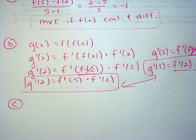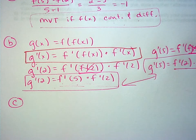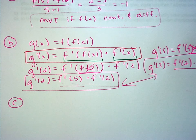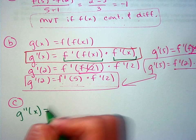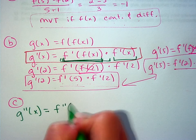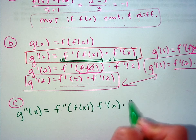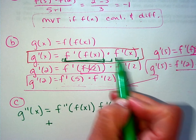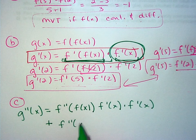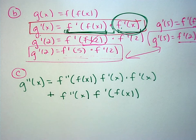Part c: show that the second derivative g″(x) is 0 for all x, and therefore the graph has no point of inflection. Starting from g′(x) = f′(f(x)) · f′(x) from part b, we apply the product rule. The second derivative is: [derivative of the first factor using the chain rule] times the second, plus the first times [derivative of the second factor]. The derivative of f′(f(x)) by the chain rule is f″(f(x)) · f′(x), and the derivative of f′(x) is f″(x). So g″(x) = f″(f(x)) · f′(x) · f′(x) + f′(f(x)) · f″(x).